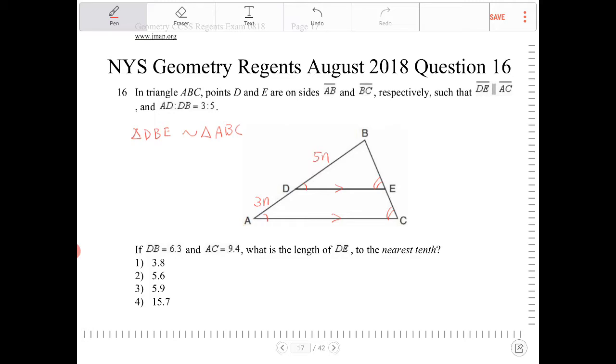If DB is equal to 6.3, so DB is equal to 6.3, so that means 5N is equal to 6.3, AC is equal to 9.4.